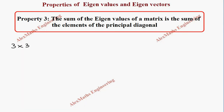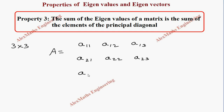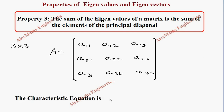It is having 3 rows and 3 columns. Let the matrix A have the elements a11, a12, a13, then a21, a22, a23, then a31, a32, a33. The characteristic equation is determinant of A minus lambda I equal to 0.